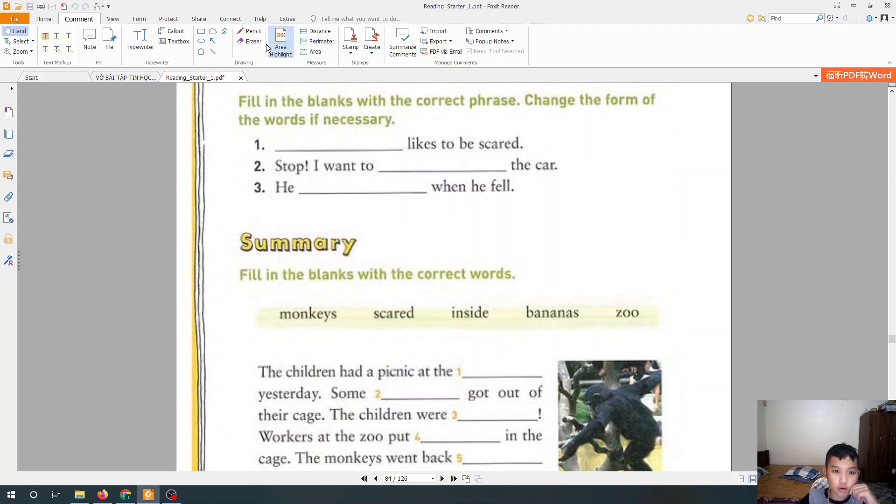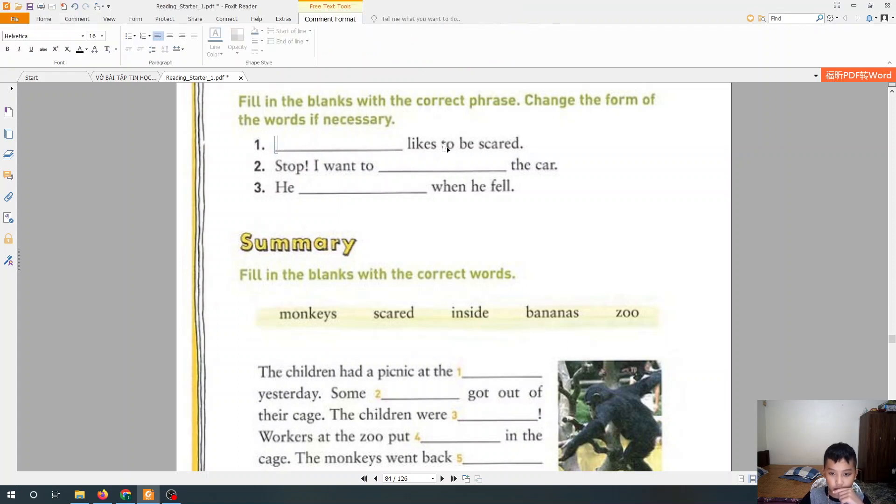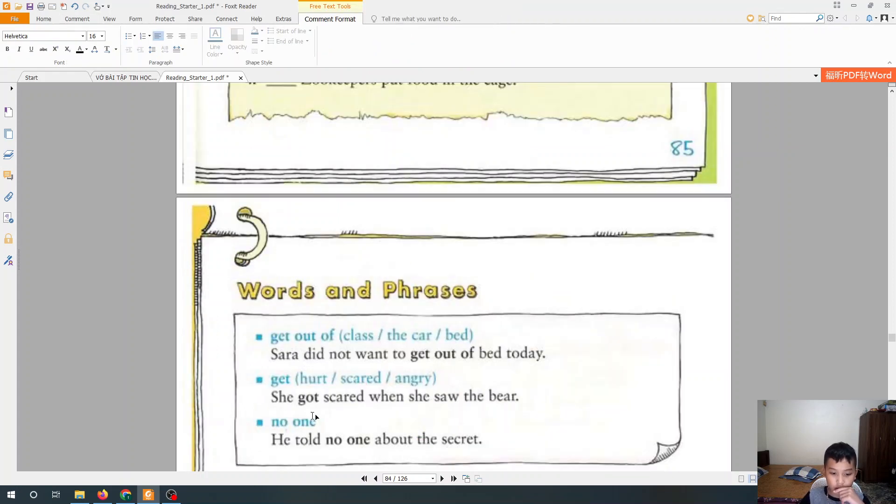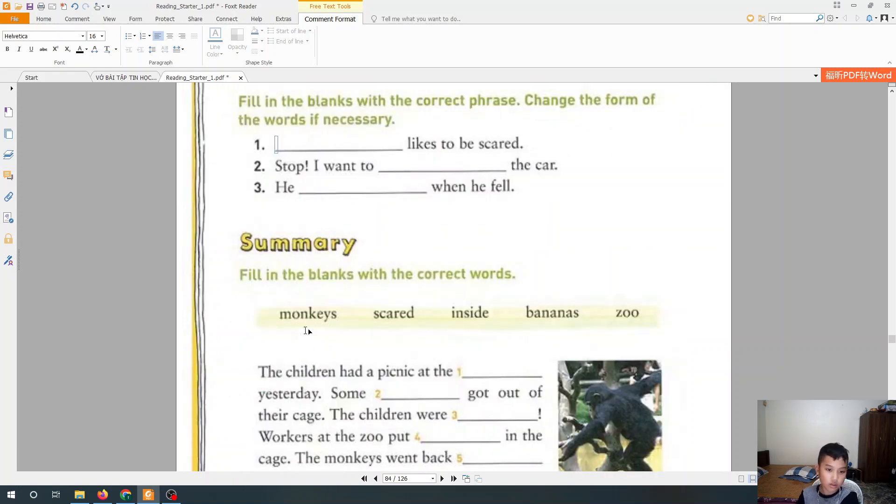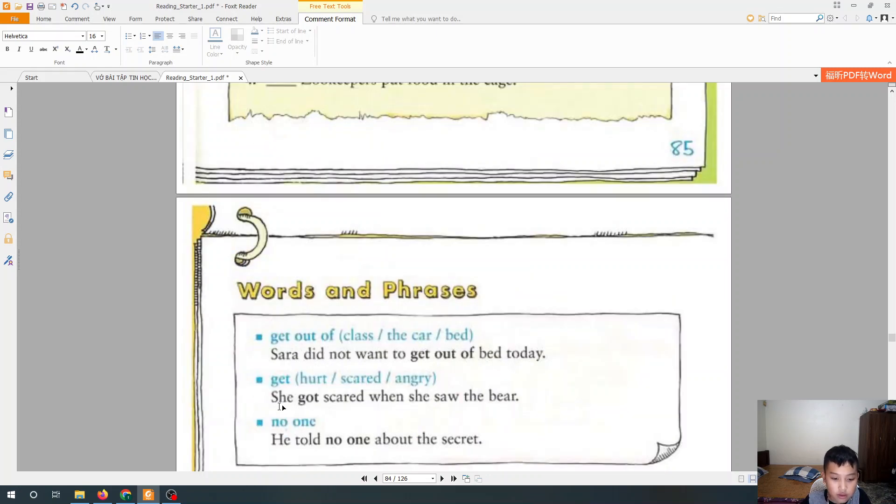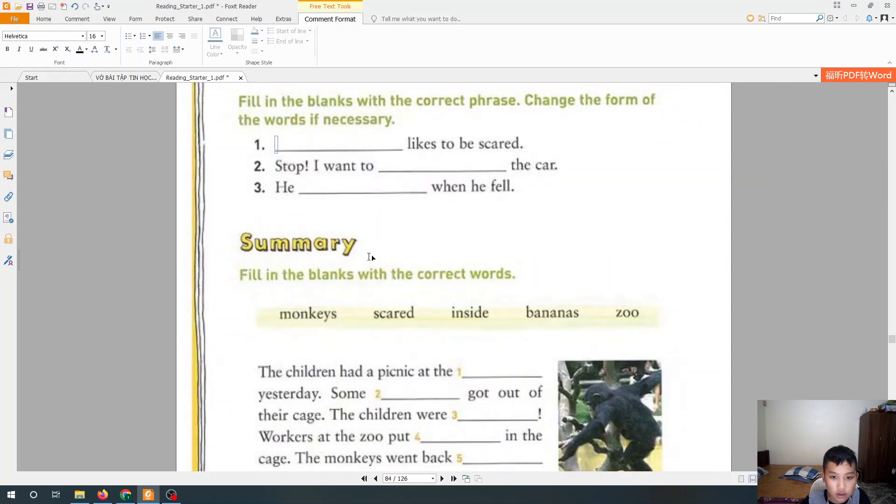Fill in the blanks with the correct phrase everyone. First sentence, naturally scared. She got scared when she saw the bear. Next, he get hurt when he fell.